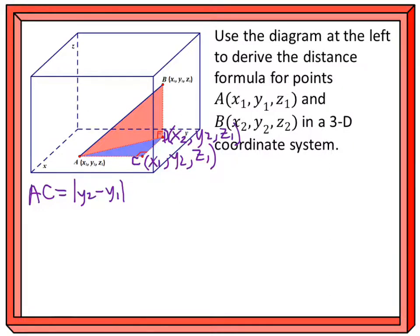So now I need the length of CD. Now I'm moving along the x-coordinate. So if I'm moving along the x-coordinate, the only thing that's changing is the x-coordinate. So from D to C, if I subtract my two x-coordinates, x2 minus x1, then I have that length.